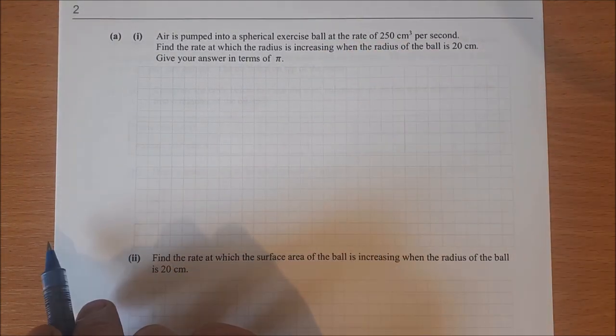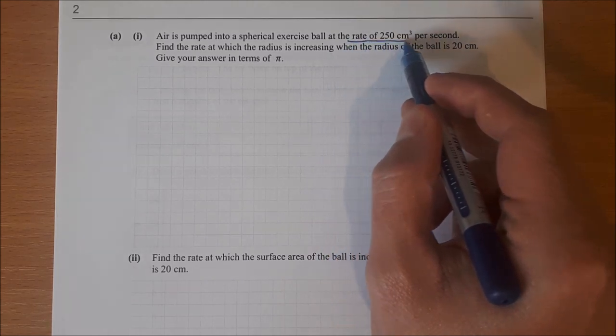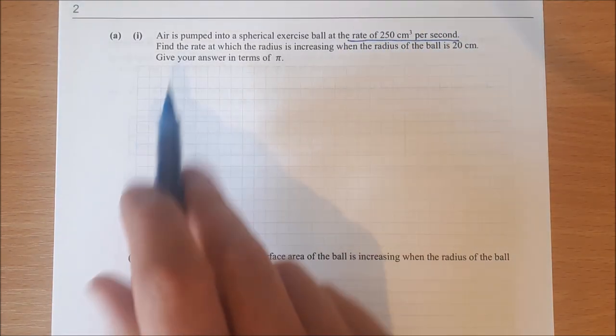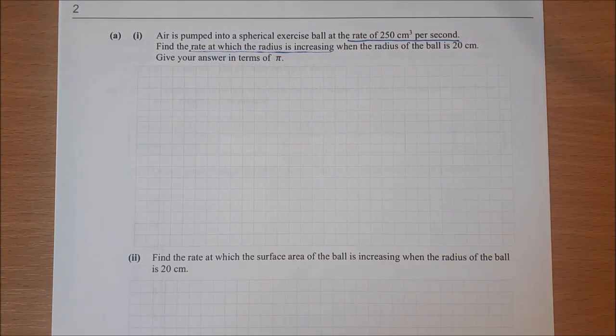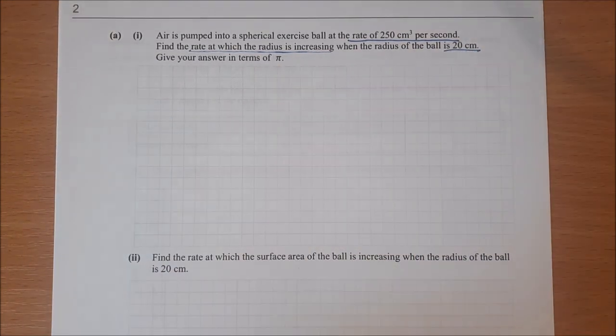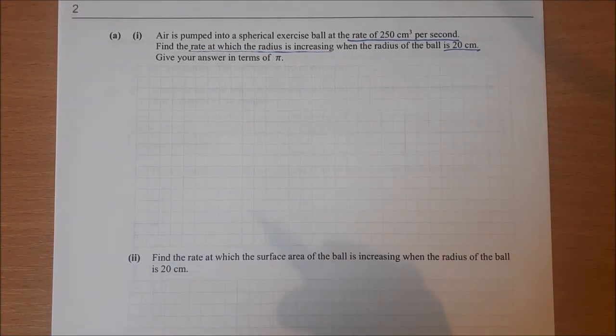At the rate of 250 cubic centimeters per second. So straight away we have a rate there. Find the rate at which the radius is increasing when the radius is 20 centimeters and give your answer in terms of pi. So where do we start with this?